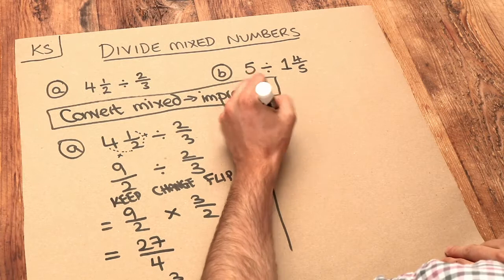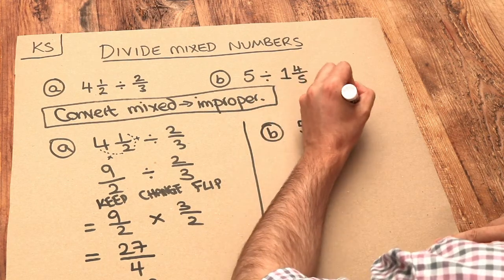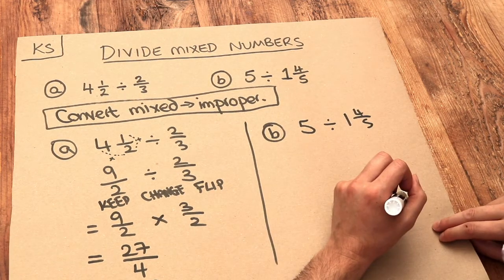What about the second one? We've got 5 divided by 1 and 4 fifths. Again we need to convert these into improper fractions.